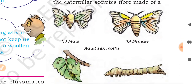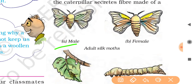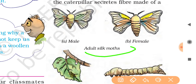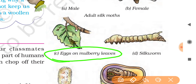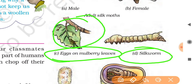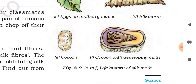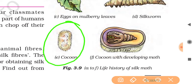You can see in figure 3.9: there are adult silk moths of male and female, which feed on mulberry leaves found on the mulberry plant. The silk moth changes into silk form first, then it further changes into a cocoon, and then into a cocoon with a developing moth.